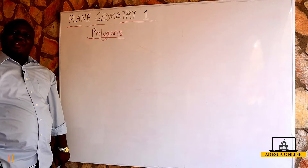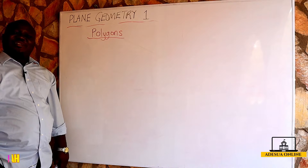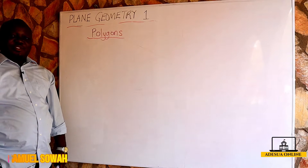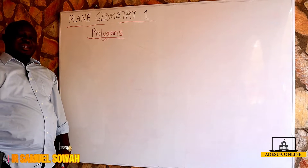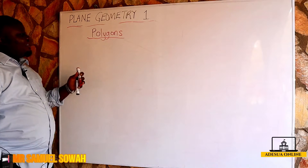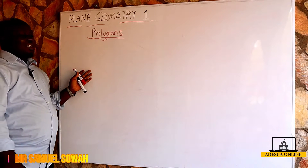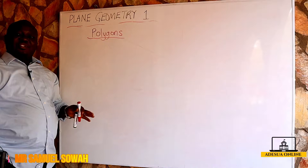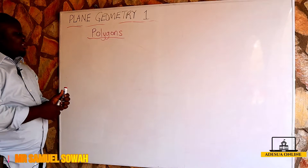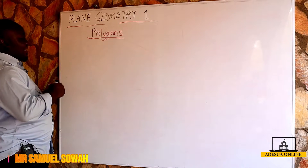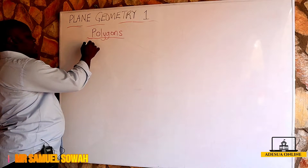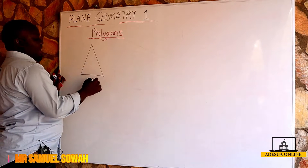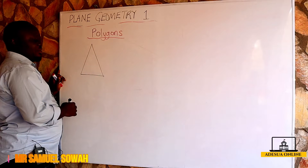Hello students, today we are going to continue our lesson by learning about polygons. A polygon is a plane figure which has more than three lines of symmetry. Assuming I have a triangle — a triangle is a polygon.